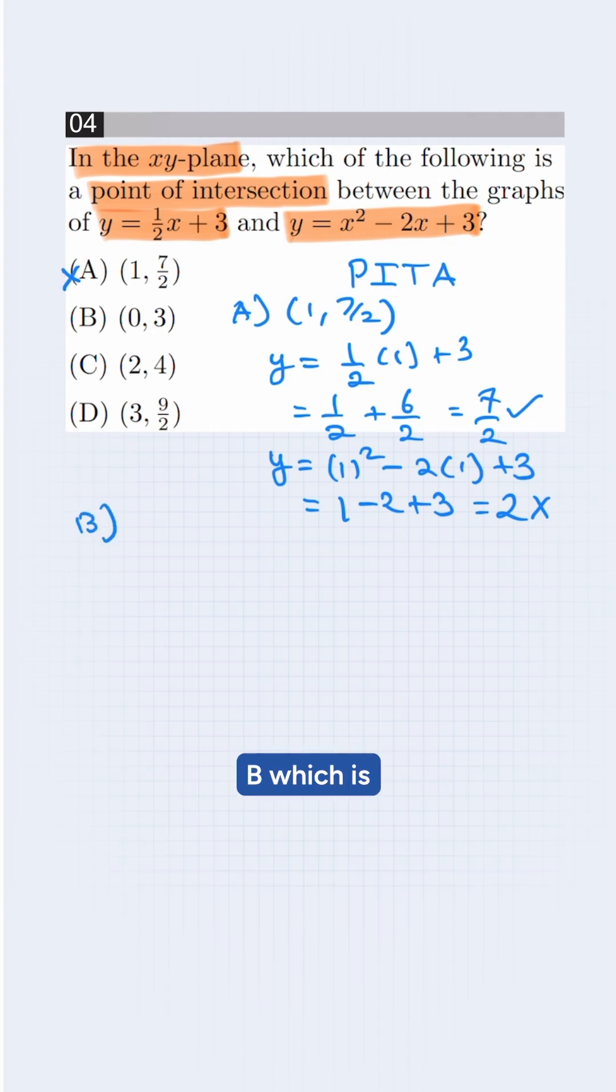We try for B, which is (0, 3). We put this into the first equation, so y equals ½ into 0 plus 3. This will be 0 plus 3, which is 3. It matches with the option.